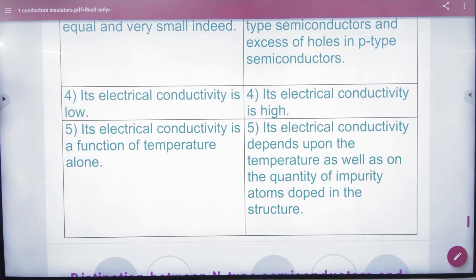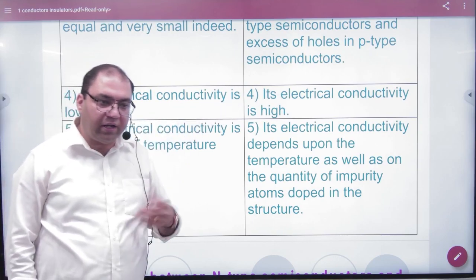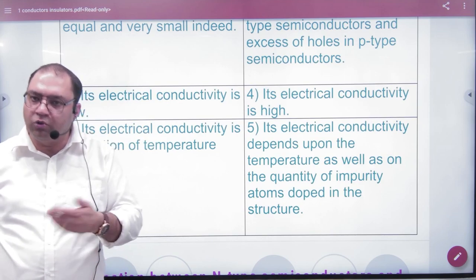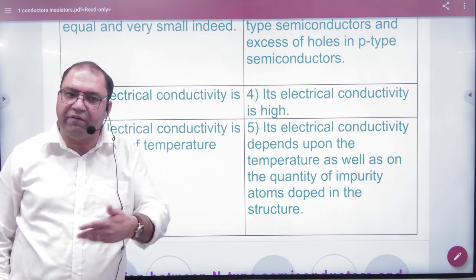The electrical conductivity is low in intrinsic semiconductors. The electrical conductivity is high in extrinsic semiconductors because with doping, holes or electrons will increase, so electrical conductivity increases.